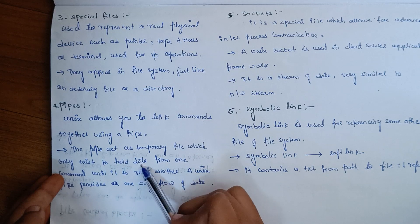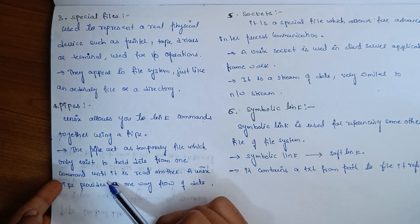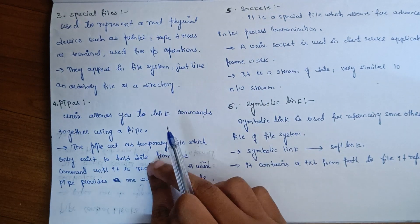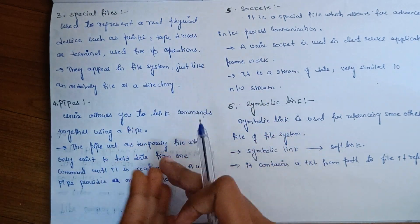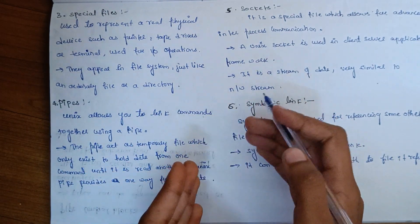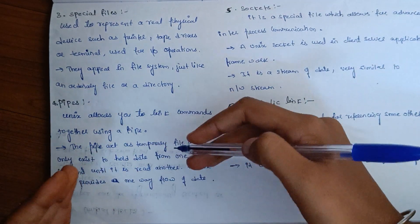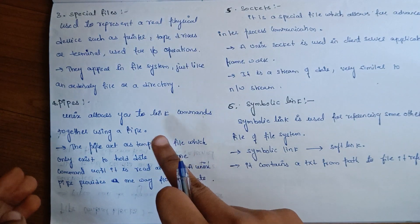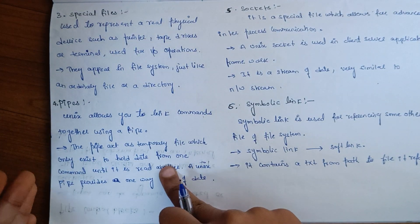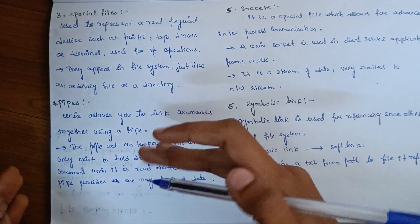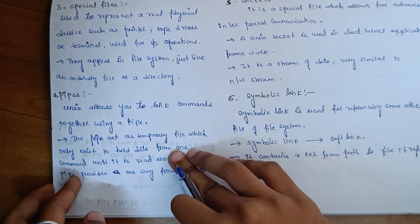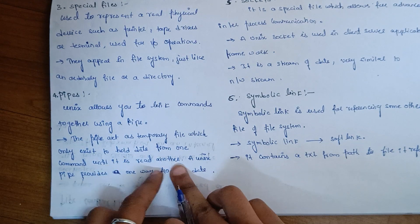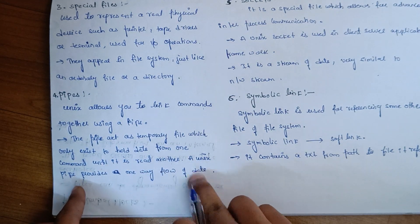A pipe acts as a temporary file which only exists to hold data from one command until it is read by another command. Unix pipes provide one-way flow of data, processing commands one by one.